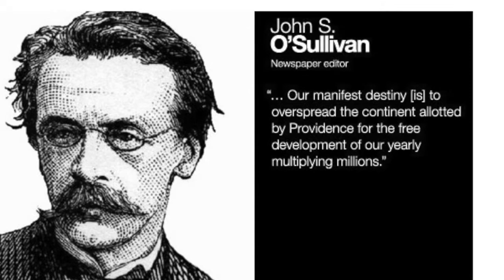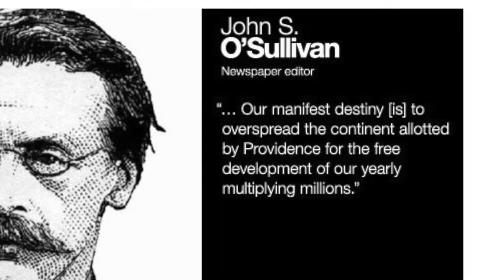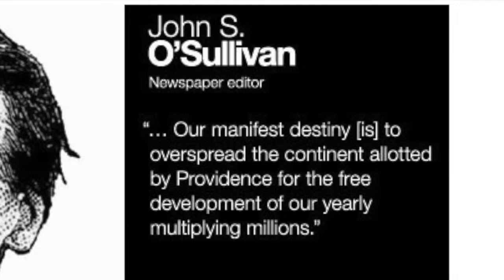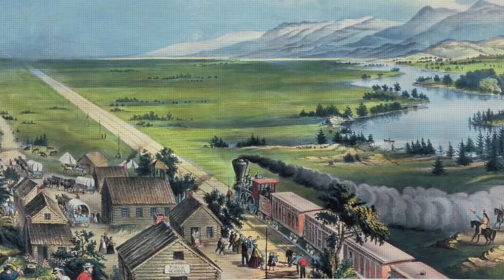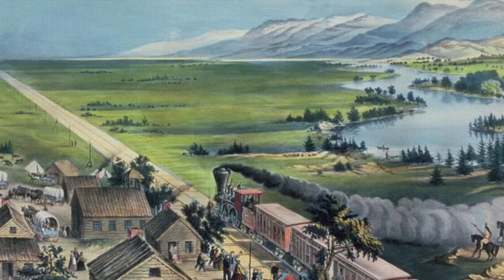In that year, the United States admitted Texas to the Union as the 28th state. Writing about the event, O'Sullivan spoke of America's Manifest Destiny to overspread the continent allotted by Providence for the free development of our yearly multiplying millions. Basically, he was saying that it was the right thing to do for Americans to take all the land stretching to the Pacific Ocean.